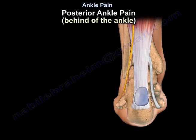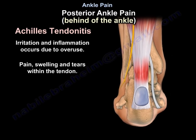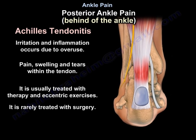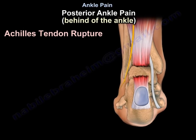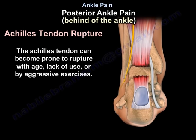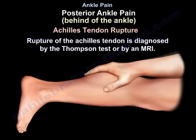Achilles tendonitis occurs due to overuse, causing irritation, inflammation, pain, swelling, and tears within the tendon. It is usually treated with therapy and eccentric exercises, and rarely requires surgery. Achilles tendon rupture can become prone with age, lack of use, or aggressive exercise. Rupture is diagnosed by the Thompson test or by MRI.